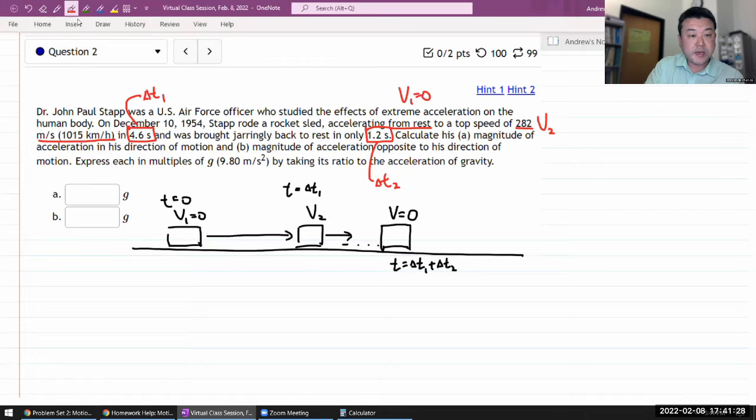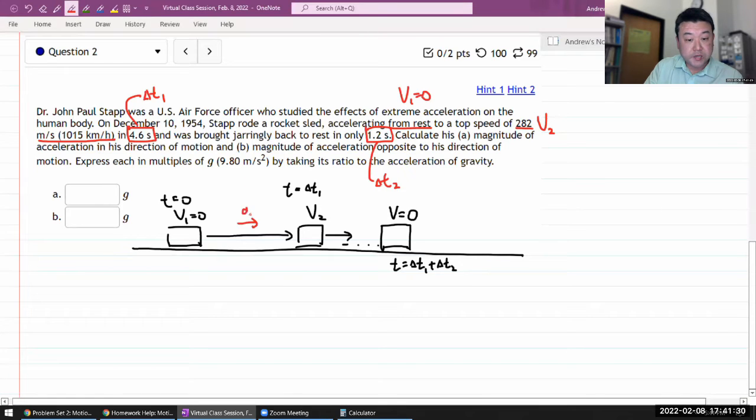So they are asking for the acceleration at each of these segments: acceleration during this portion here and in this portion. Even though the thing is still moving to the right, acceleration will actually be opposing the motion because it's slowing it down. It's reducing the speed. So in this portion there's a leftward acceleration. That's what part b is asking.